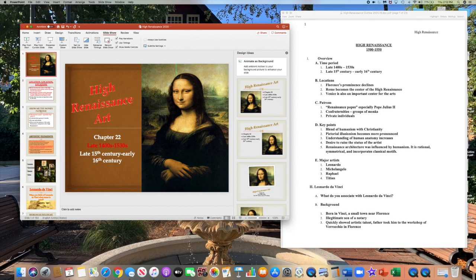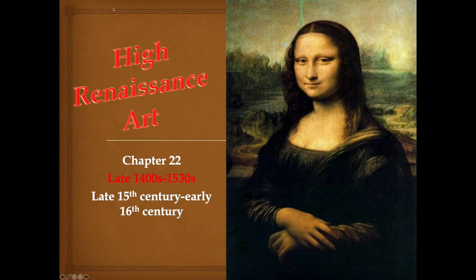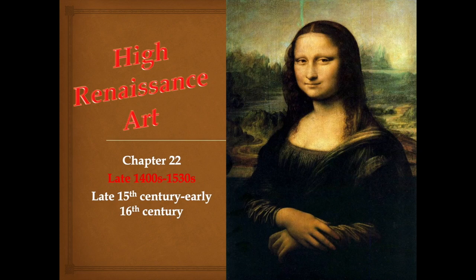We are still in our unit that started with the Northern Renaissance, then the Early Renaissance — this is the unit on Europe and America from 1400 to 1750. We finished up the Early Renaissance and now we're getting into the High Renaissance. This is the late 1400s to about 1530, and again the year Raphael dies is considered the official ending of the High Renaissance — so we're in the 15th century into the early 16th century.